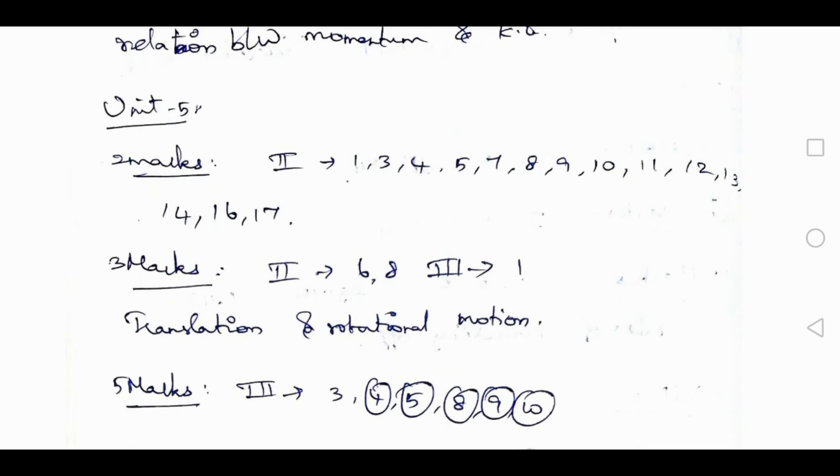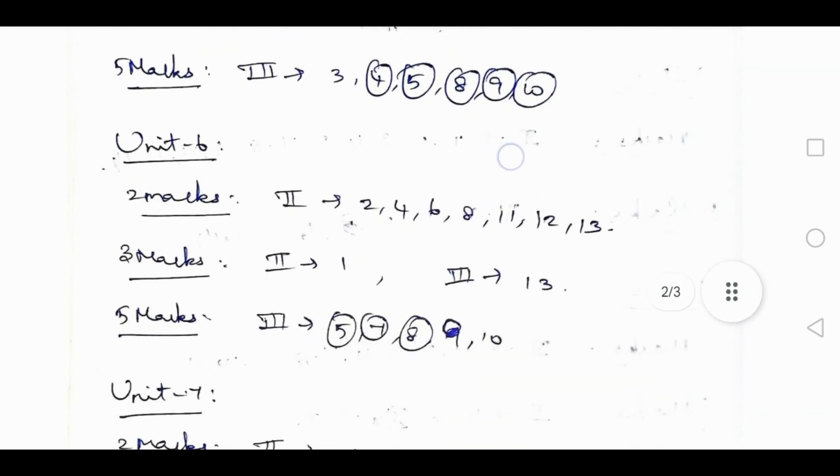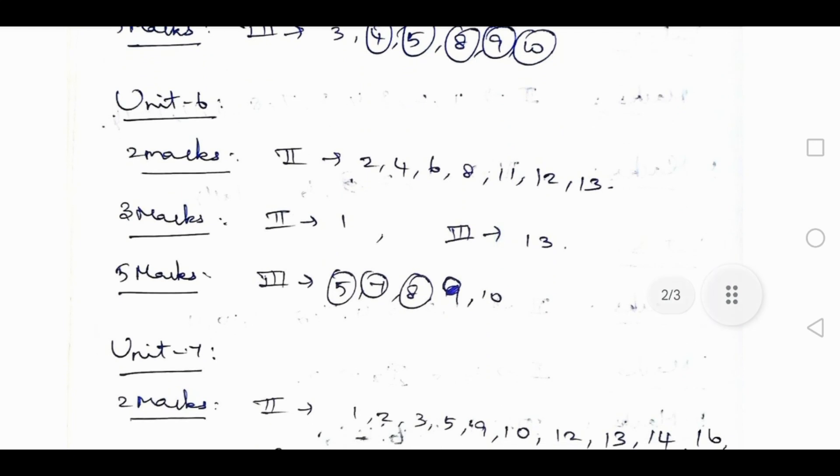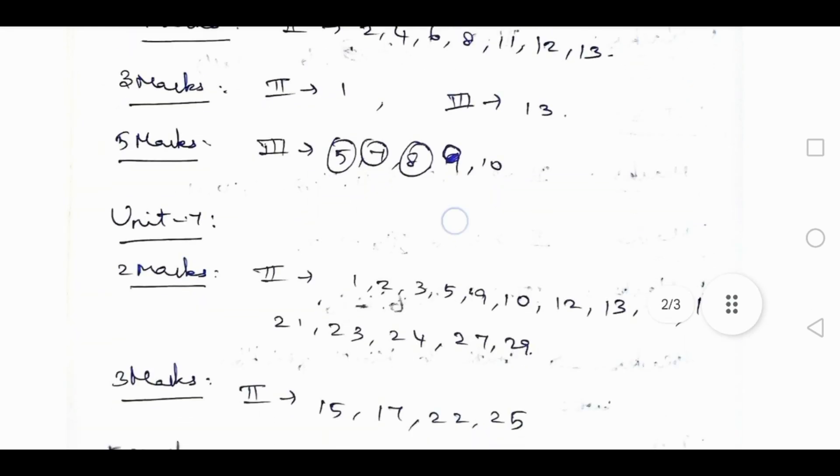Unit 6: 3rd rom letter, 3 mark 12, 13. 3 mark up to 2nd rom later first question. 3rd rom later 13th question. 5 mark up to 3rd rom later 5, 7, 8, 9, 10 - don't skip it.